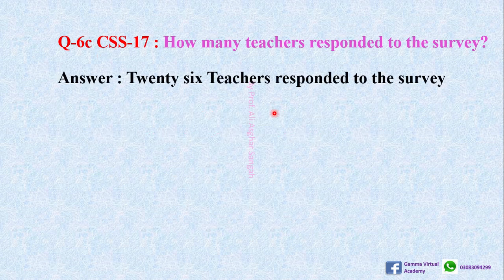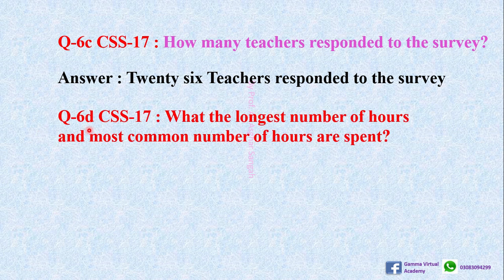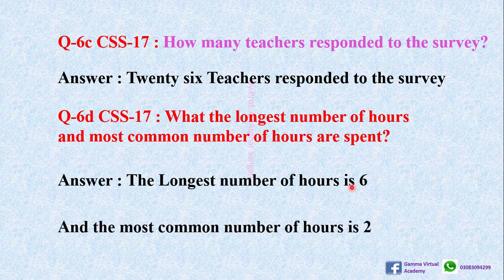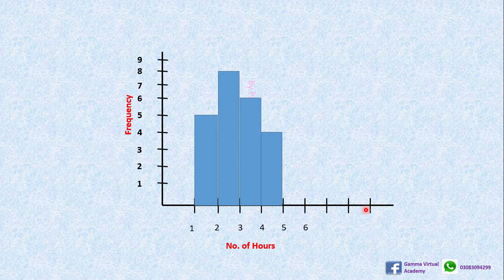Question 6D asks: what is the longest number of hours and the most common number of hours spent? The longest number of hours is six — that is the highest value in the data. The most common number of hours means the one with the highest frequency, which is two hours, because it appears eight times — the highest frequency of all.